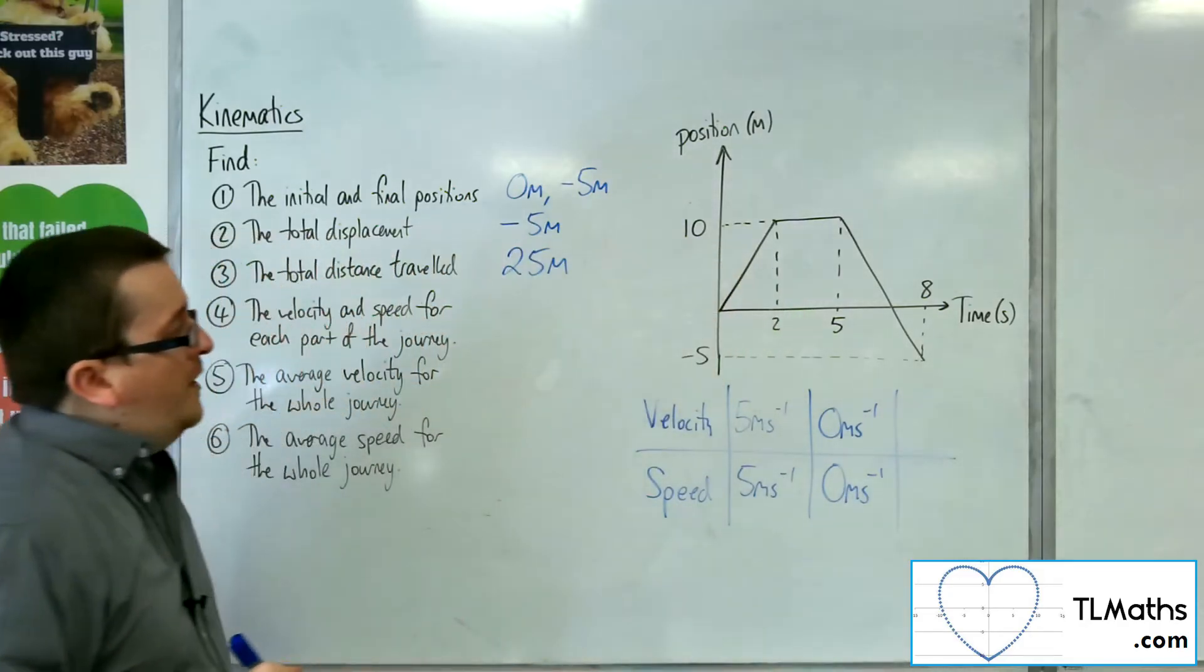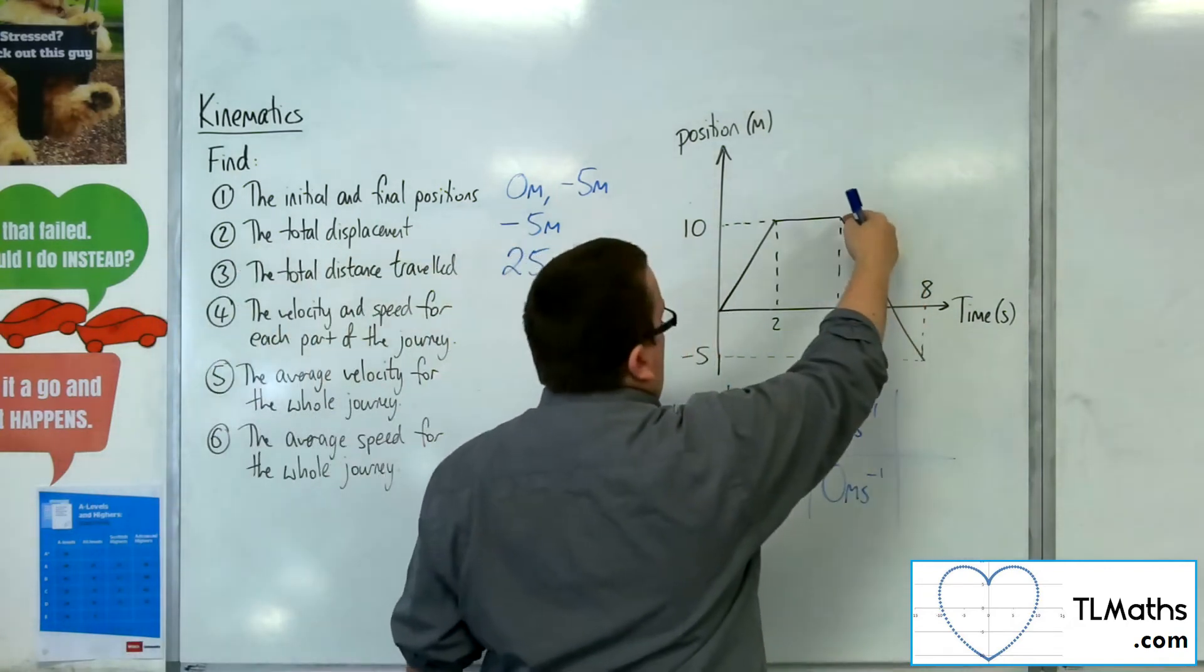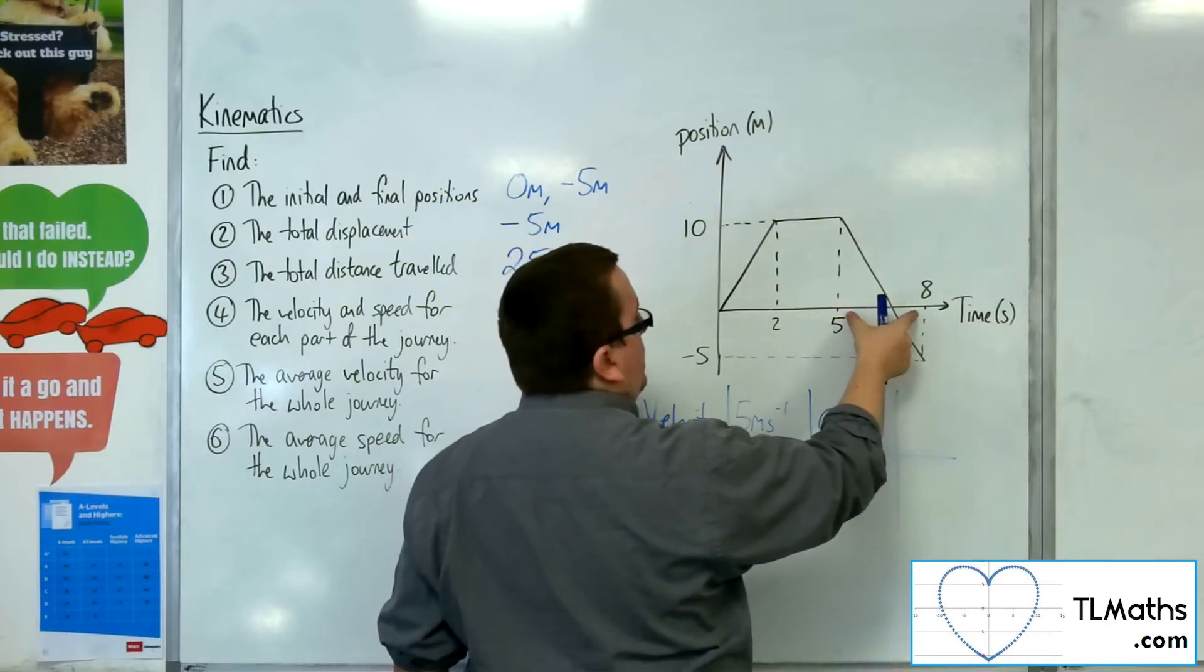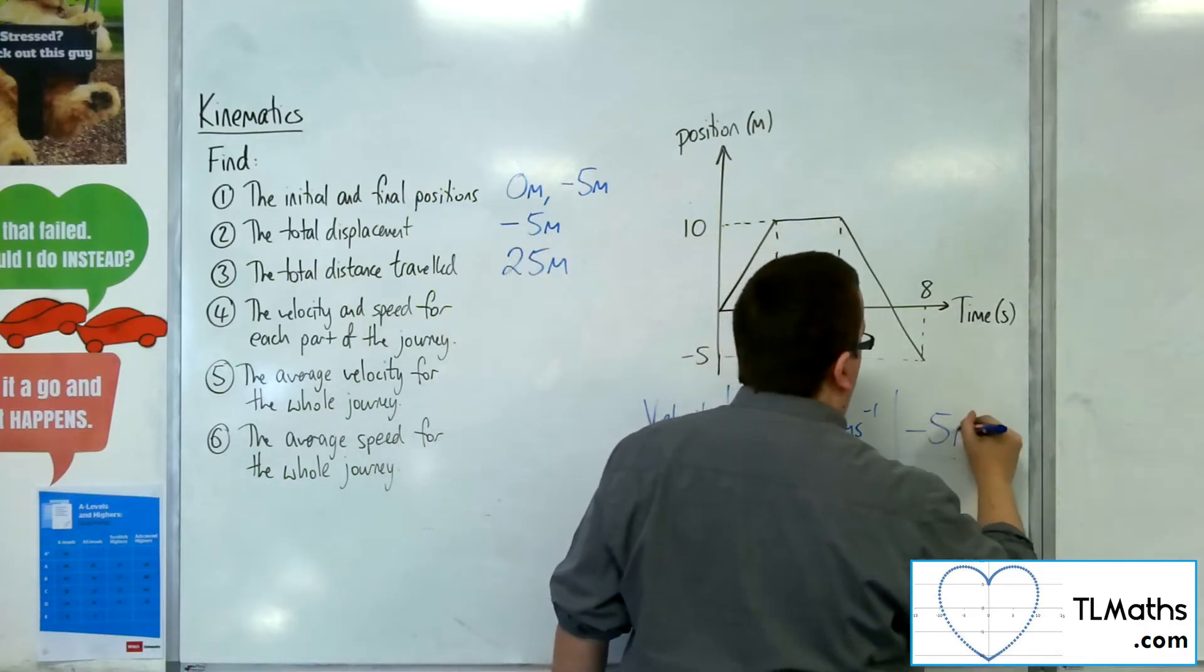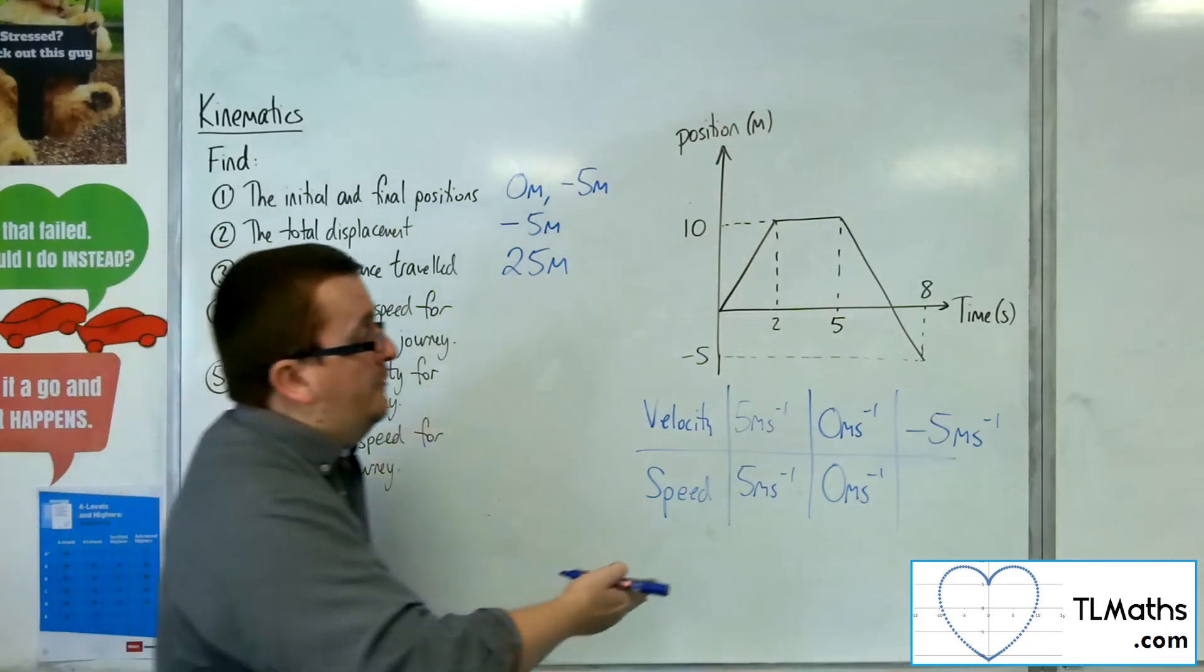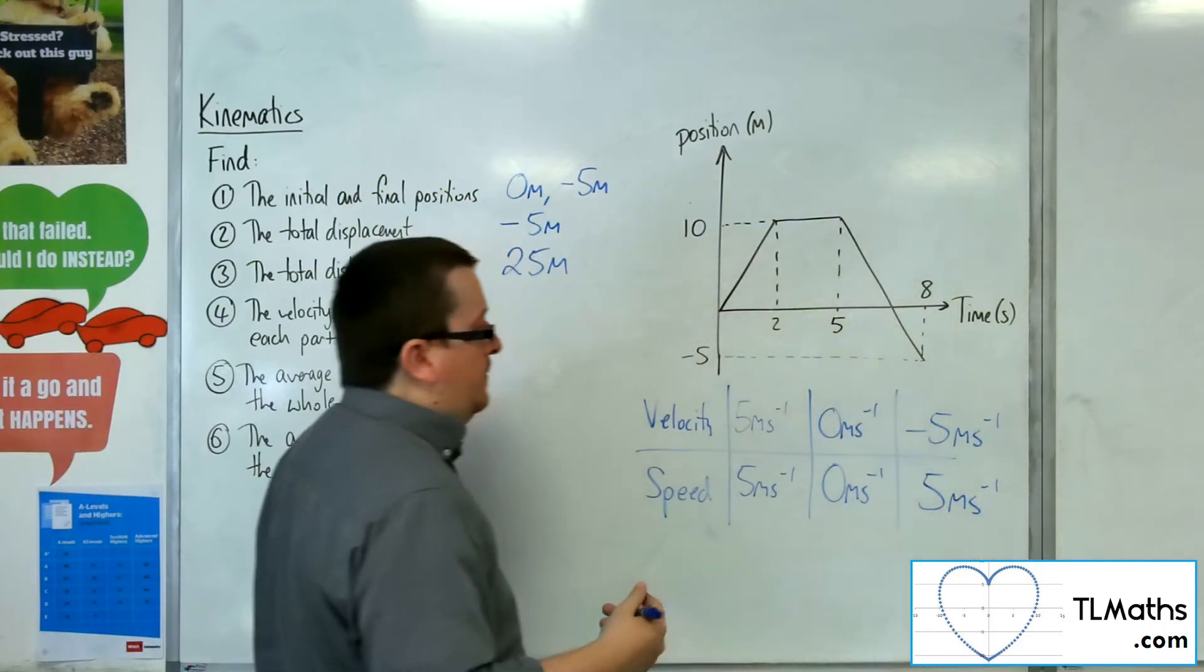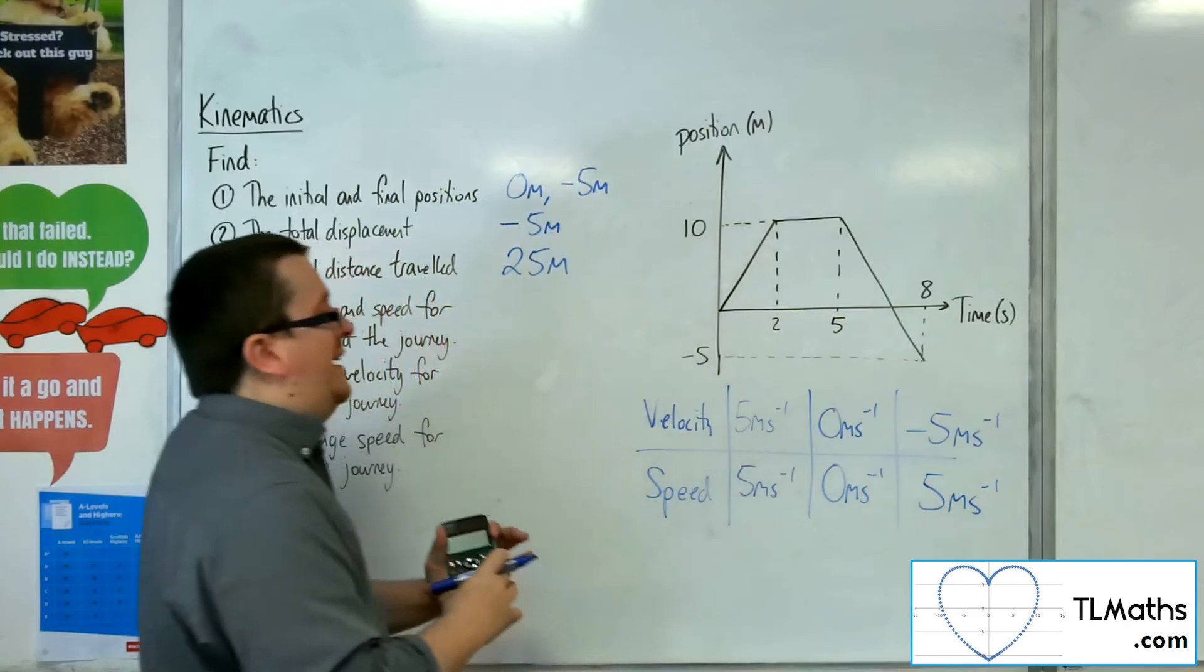But for the third and final section, for the velocity, going from 10 down to minus 5, so minus 15 divided by 3. So that would be minus 5 metres per second. But the speed is that they've gone 15 metres in 3 seconds, so it would be 5 metres per second. So you can see that actually the speed is the magnitude of the velocity each time. It ignores the negative.